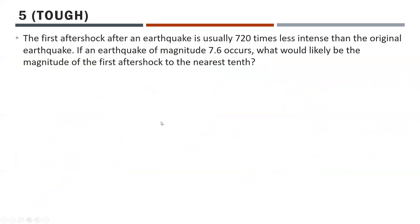One more question — this one is a bit tough, but give it an honest try. The first aftershock after an earthquake is usually 720 times less intense than the original earthquake. If an earthquake of magnitude 7.6 occurs, what is the likely magnitude of the first aftershock to the nearest tenth? Hint: remember that 10 to the power of M equals the intensity.